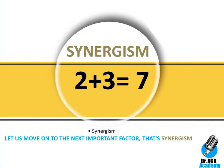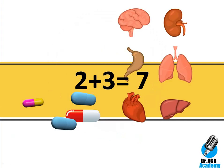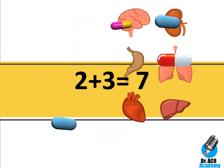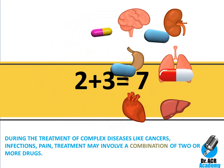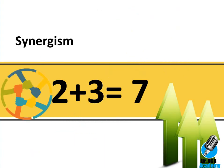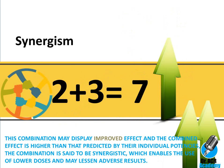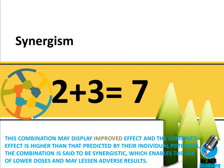The next important factor is synergism. During the treatment of complex diseases like cancers, infections and pain, a synergistic effect is higher than predicted, enabling the use of lower doses and lessening adverse results. For example, combination therapy of procaine and adrenaline will considerably increase the duration of activity of procaine, used as a local anesthetic agent.